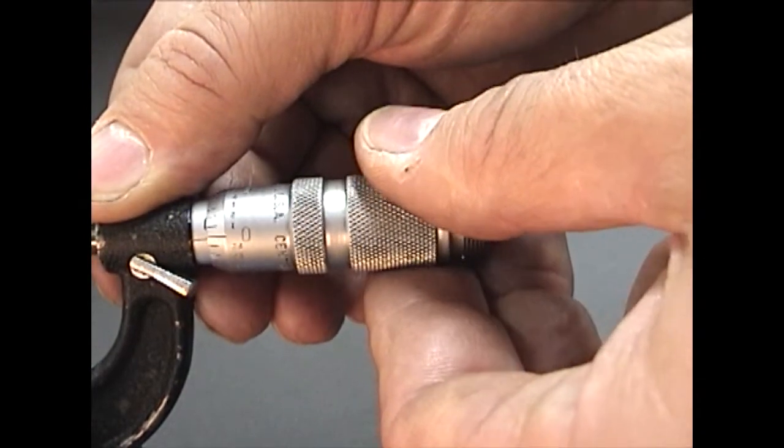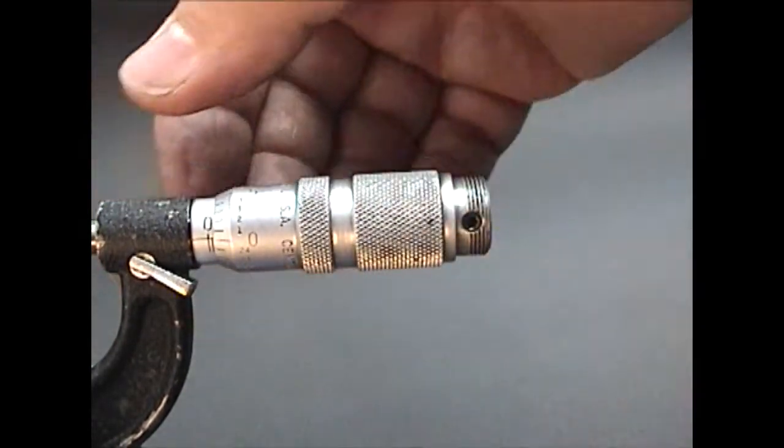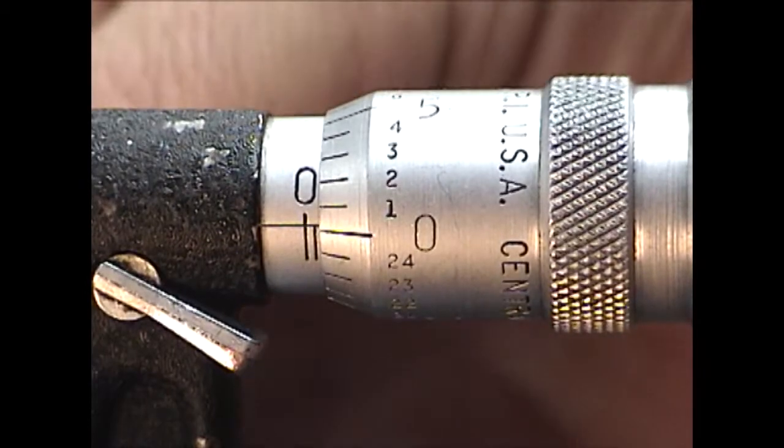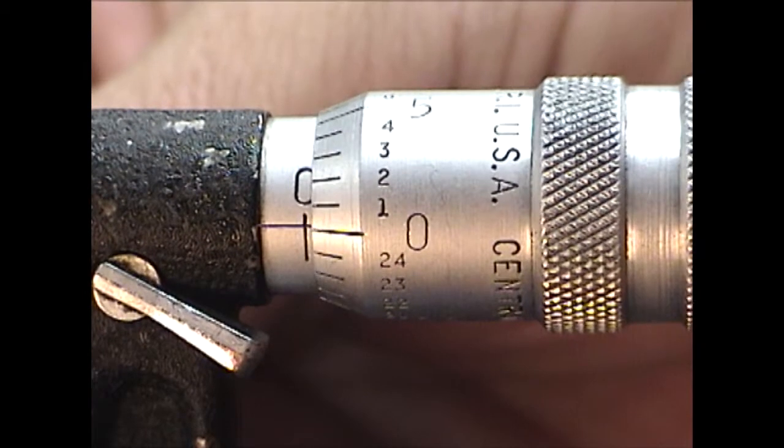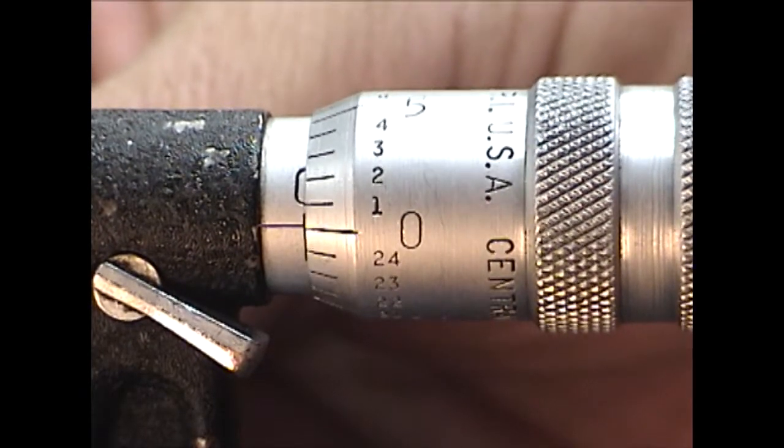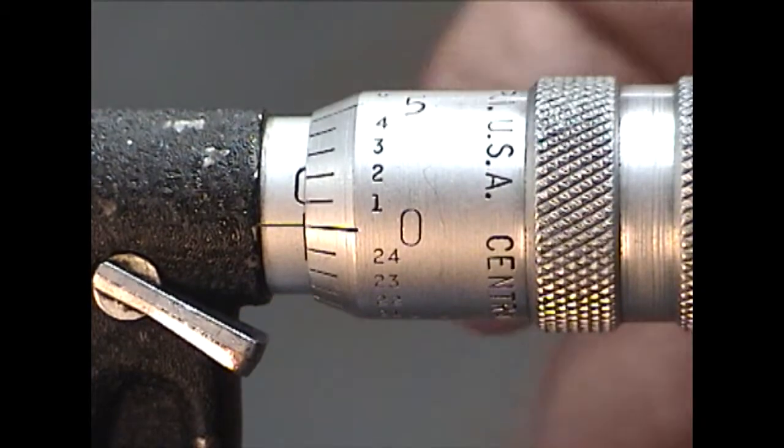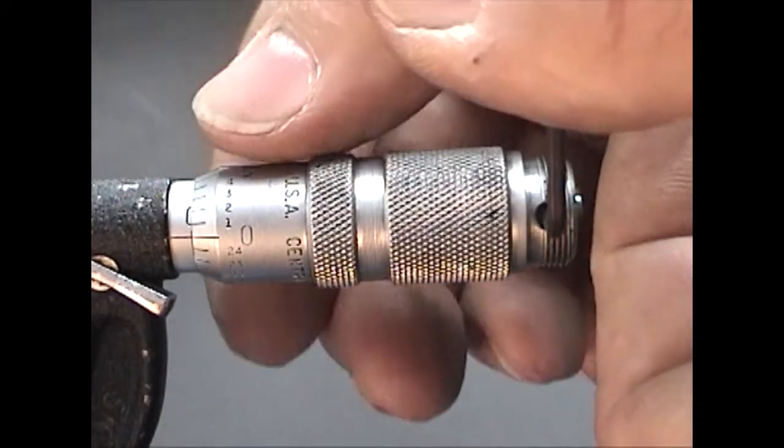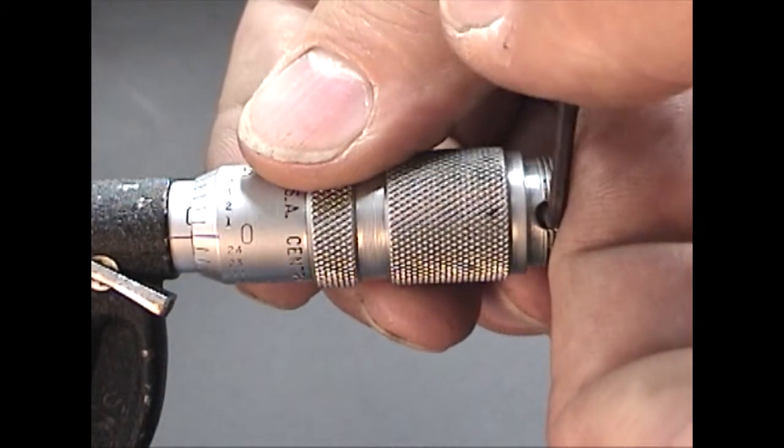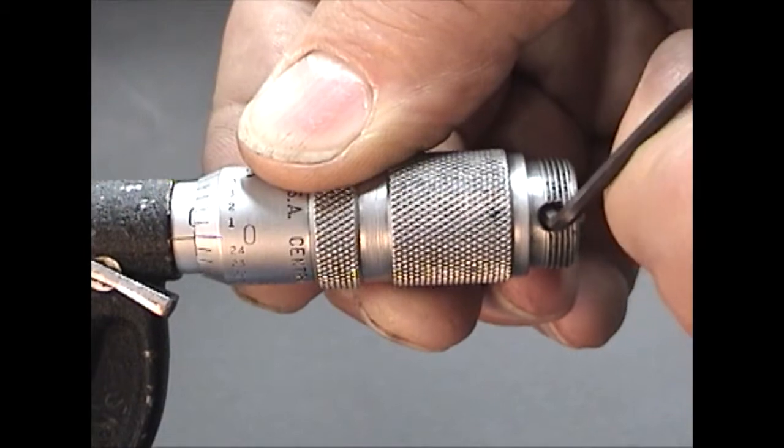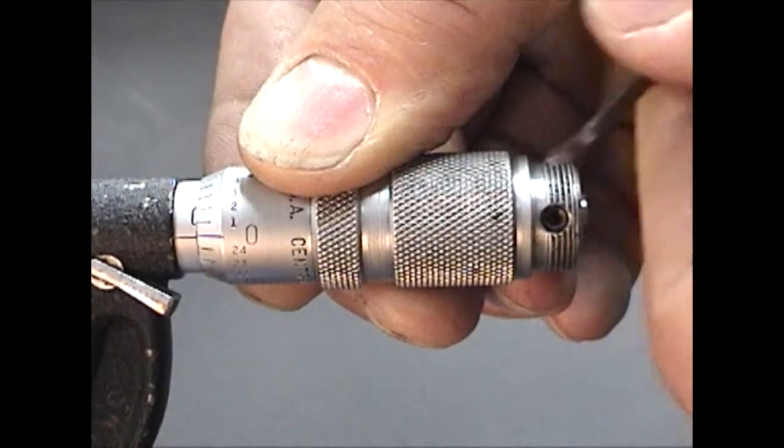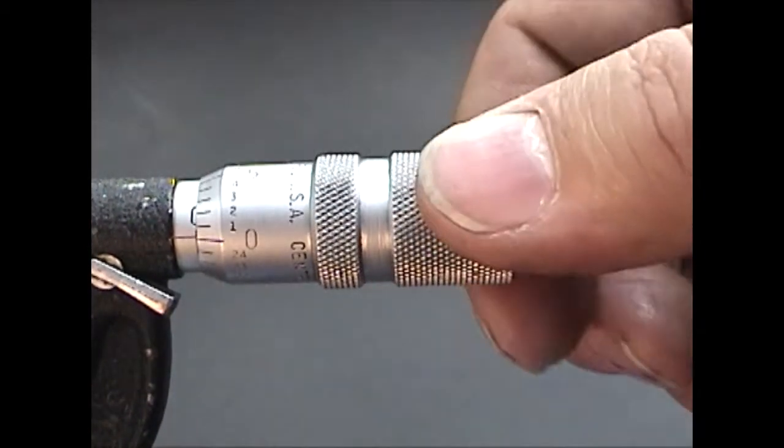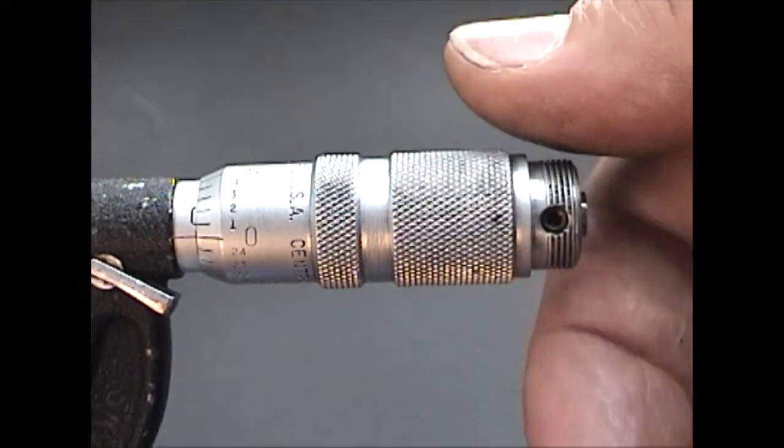This thimble is not spring loaded. This makes calibration easier. Adjust the position of the thimble and tighten the set screw. Open and close the micrometer a few times to check the calibration.